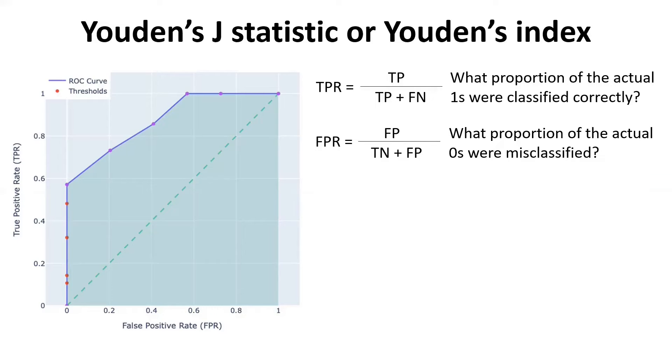The definitions of true positive rate and false positive rate are written here. The true positive rate is nothing but true positive divided by true positive plus false negative. It implies what proportion of the actual ones were identified correctly. And false positive rate talks about what proportion of the actual zeros or the other class were misclassified. We've done separate videos on confusion matrix as well as the ROC curve. You may refer to those videos if you need necessary foundation.